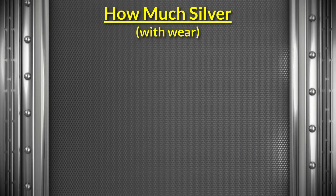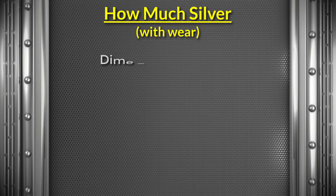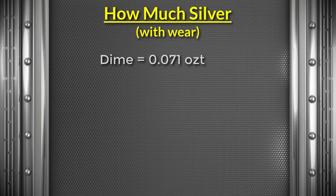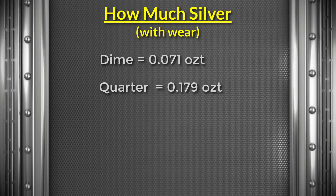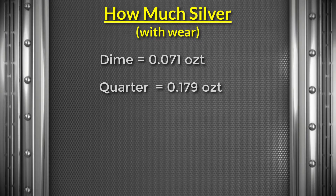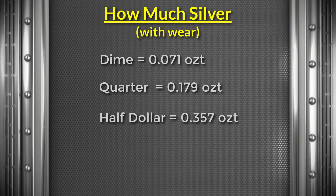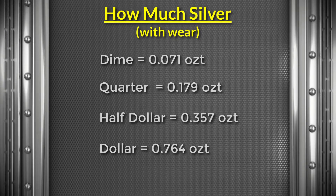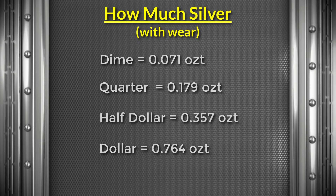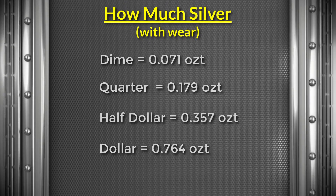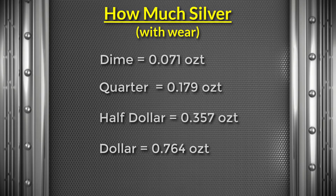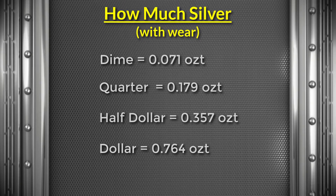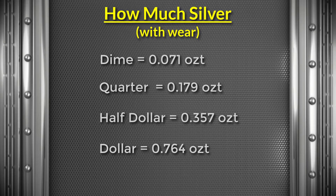Here's a silver breakdown in troy ounces with wear. A dime is 0.071 troy ounces. A quarter is 0.179 troy ounces. A half dollar is 0.357 troy ounces. And a dollar — a Morgan or Peace dollar — is 0.764 troy ounces. These are the amounts of silver with the coins having wear on them, which is the designated amount used since almost all constitutional silver is going to have wear.